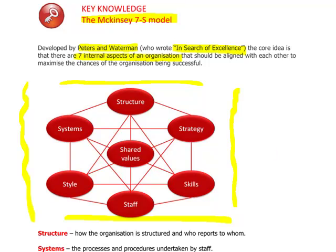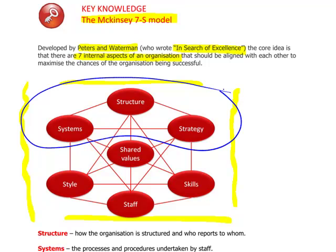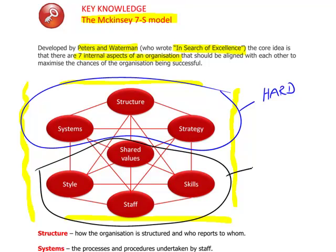There is also a classification where three of the seven are known as hard elements and four are known as soft elements. The hard elements can be influenced by management — specifically structures, systems, and strategy. The soft elements, on the other hand, tend to be more difficult to describe; for example, shared values can be more difficult to define clearly.